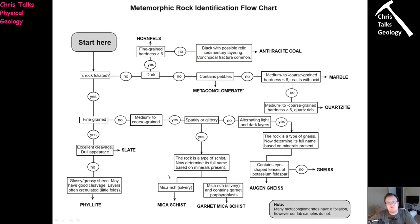Mica makes schists extremely shiny because those minerals are naturally very reflective. In some instances mica schists, especially muscovite ones, can literally look like you've wrapped a rock in tinfoil. We have two different varieties of mica schists. Both types are going to have a schistosity because a mica crystal is very flat and very thin — like a piece of paper — so those crystals can be knocked over and aligned to form a foliation called schistosity.